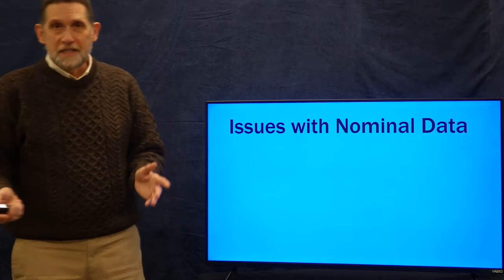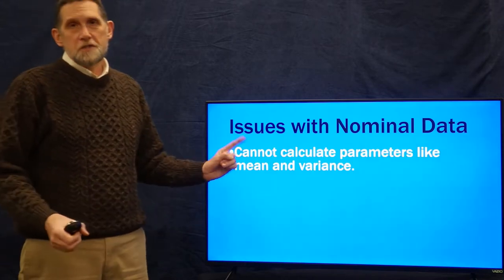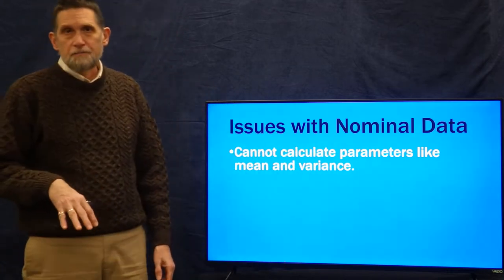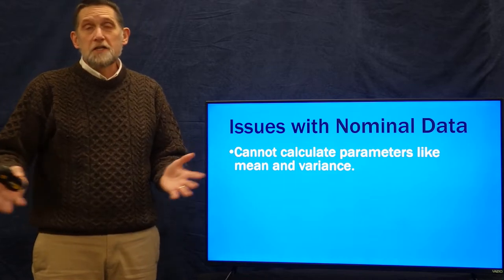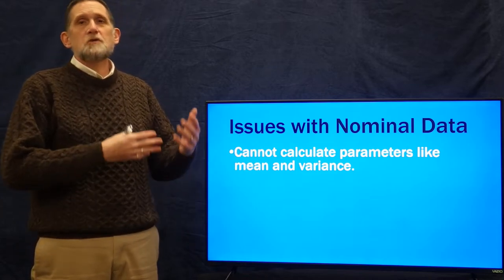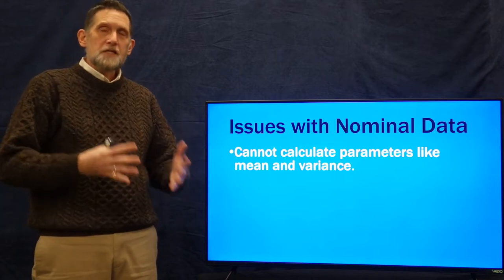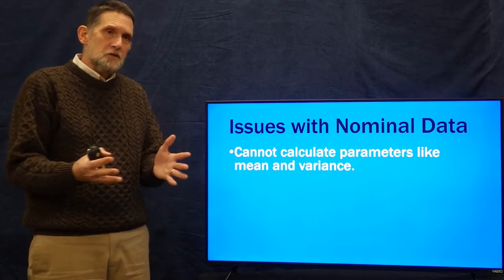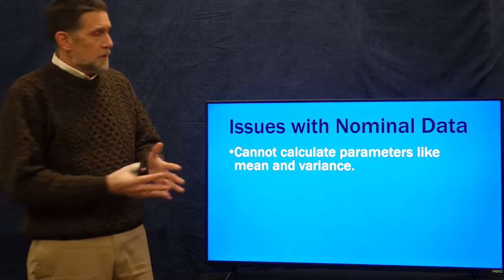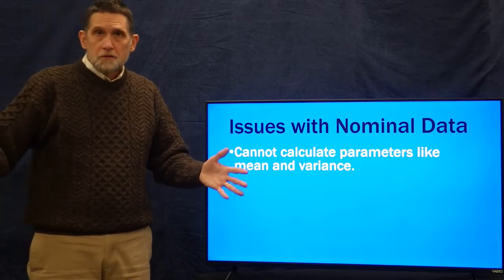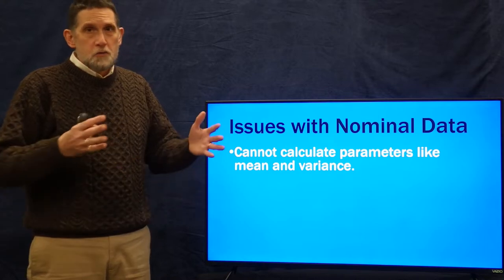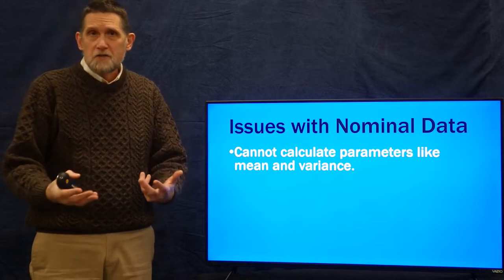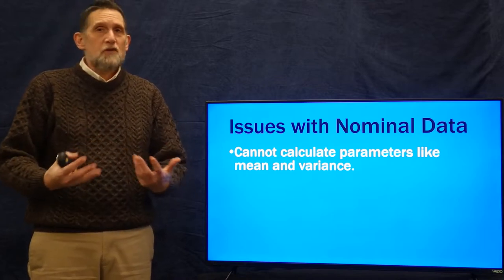There are some major issues for us dealing with nominal data, not the least of which is that we can't calculate parameters like mean, standard deviation, or variance. That means all the statistical tests we've talked about that rely on means and variances — basically everything since topic two or three, since correlation — we can't use with nominal data. That's really limiting, and that's a real problem in anthropology because we have lots of nominal data that can be very useful to us.